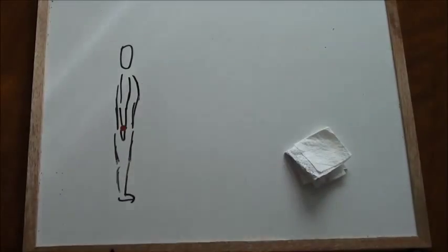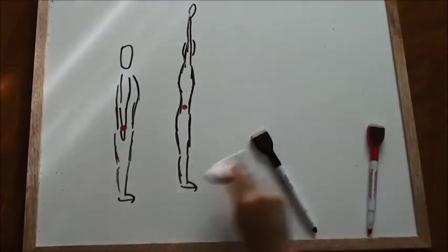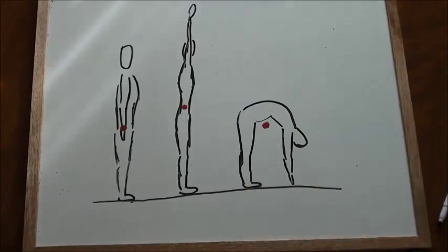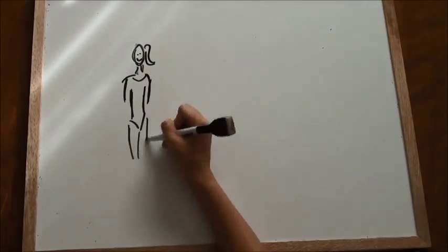Center of gravity changes as the shape does. It can even be out of the body. For example, if a person is hunching over, it will be in that empty space.